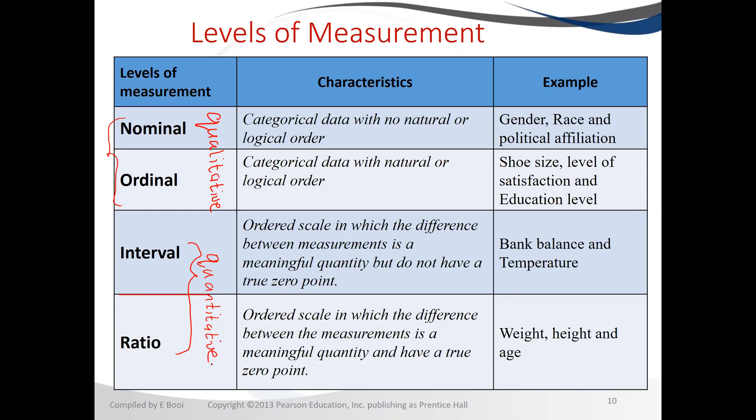Gender — male or female — has no levels. Male is not superior to female; female is not higher than male. In the natural way of things, male and female are just categories to classify a person's gender. Similarly, race — where we have Indian, Coloured, White, Black — those are just categories with no rank or order to them.